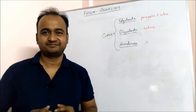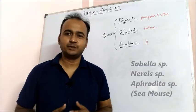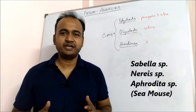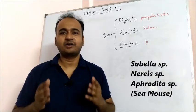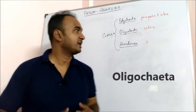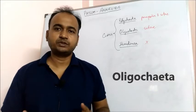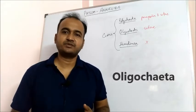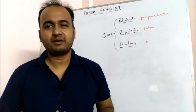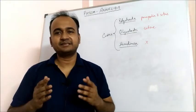Class Polychaeta includes almost 63 percent of the whole phylum, and most of them are marine. Examples include Sabella, Nereis, Aphrodita (or sea mouse). In class Oligochaeta, segmentation is both external as well as internal, and they possess a growing number of body segments.